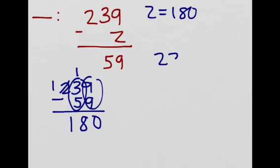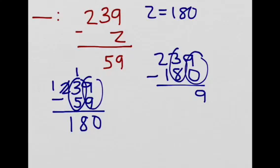So we're going to do 239 minus 180 is equal to 9 here. And then again, we're going to borrow. So we have 5, 1, 1, 0, and this is equal to 59.